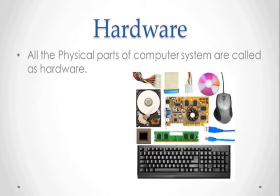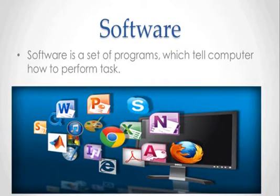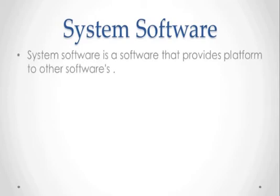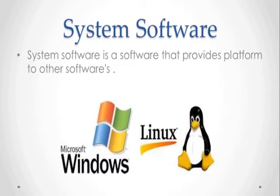Software is a set of programs which tell the computer how to perform tasks. A program is a sequence of instructions written to solve a particular problem. There are two types of software: system software and application software. System software provides a platform to other software and serves as the interface between the hardware and the end users. Examples include operating systems, compilers, and interpreters.